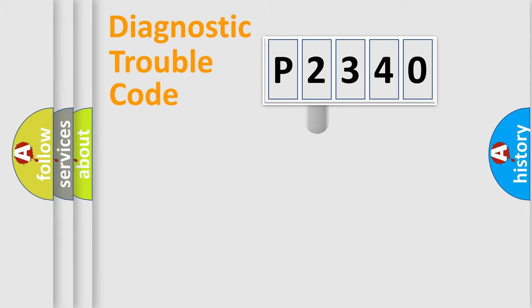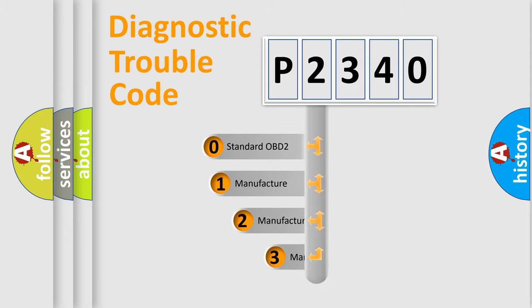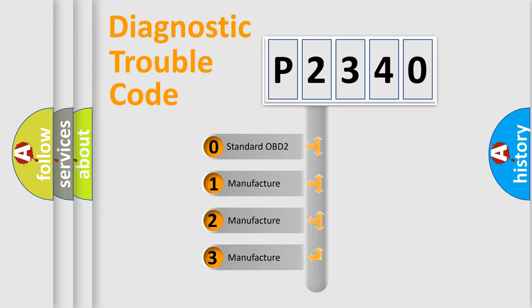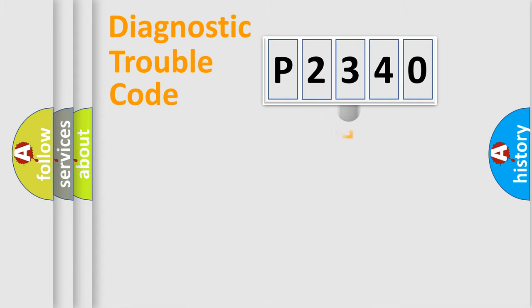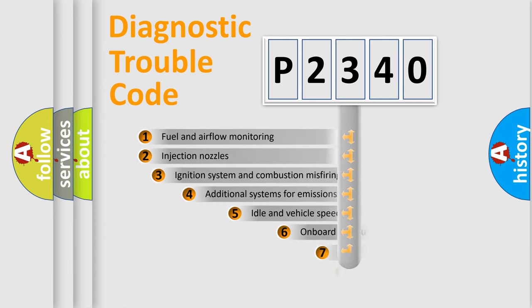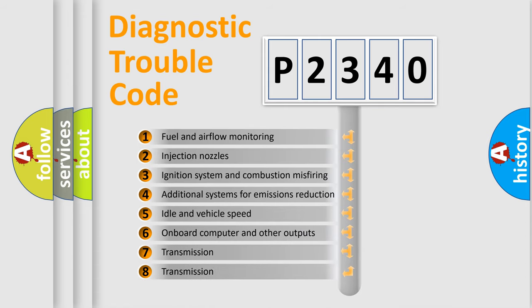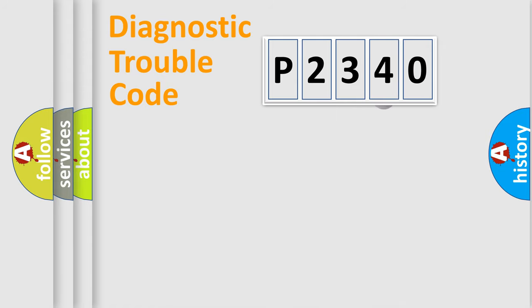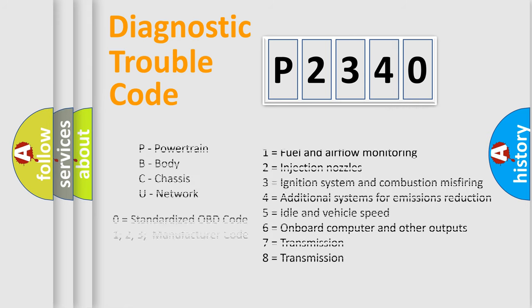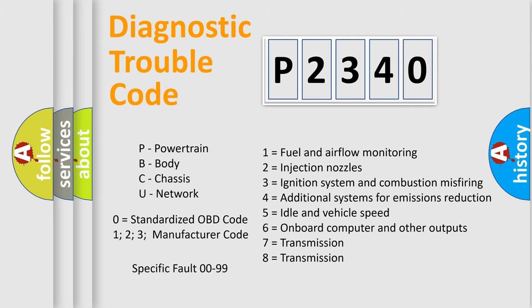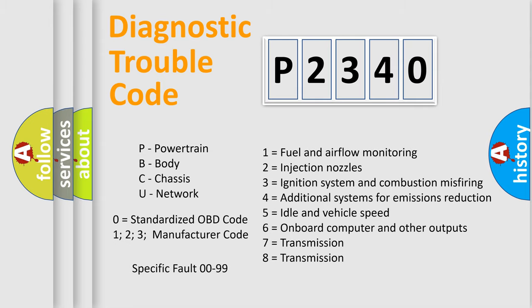This distribution is defined in the first character of the code. If the second character is expressed as zero, it is a standardized error. In the case of numbers 1, 2, or 3, it is a manufacturer-specific error. The third character specifies a subset of errors. The distribution shown is valid only for the standardized DTC code. Only the last two characters define the specific fault of the group, and this division is valid only when the second character is zero.